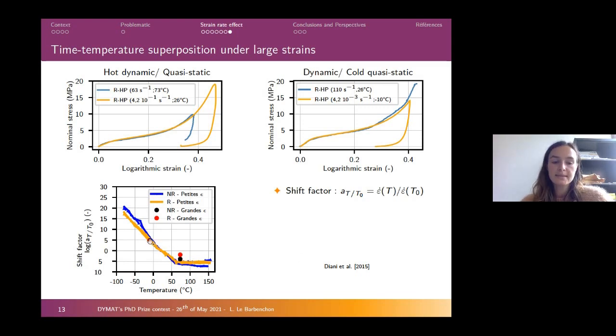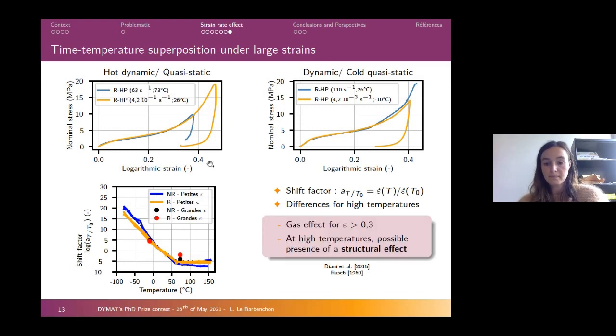Here we see that for low temperature, we have quite the same thing. But for high temperatures, we can observe differences in shift factors. That means that if we add only the material effects to obtain this kind of equivalence, the strain rate would have to be a lot larger than this effect. This means that at high temperature, there is a possible presence of a structural effect.